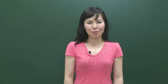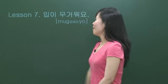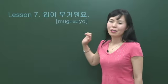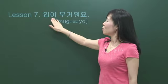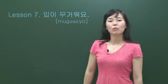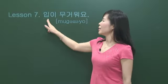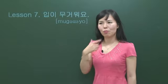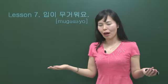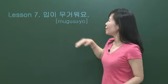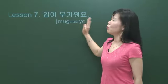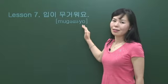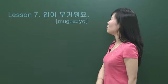So we have that idiom: 입이 무거워요. Somebody who is very slow of speech, we say 입이 무거워요. 입이 무거워요 literally means: 입, mouth; 무거워요, heavy. So mouth heavy — I don't know what that means literally, but it has an idiomatic expression for someone who is very reliable and reticent, very slow of speech. 입이 무거워요.